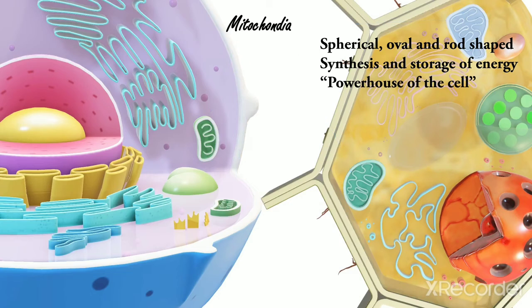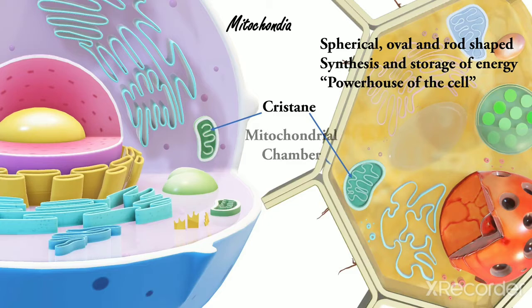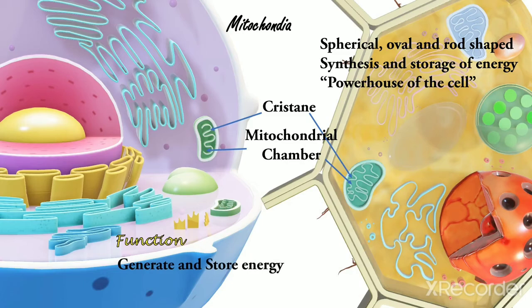The mitochondria are bounded by a double-layer membrane. The inner membrane is enfolded to form mini-projections which are called cristae. Inside a mitochondria, there is a hollow cavity called mitochondrial chamber. Function: Their function is to generate and store energy.